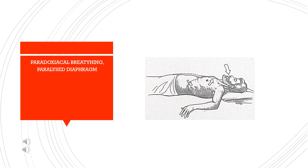Thus it becomes important that when we are assessing a neurological patient, we should also assess what kind of respiratory impairment they have. There are several specific kinds of compensatory respiratory impairments including the paradoxical breathing patterns, and adequate respiratory physiotherapy may be applied as per the need of the patient.